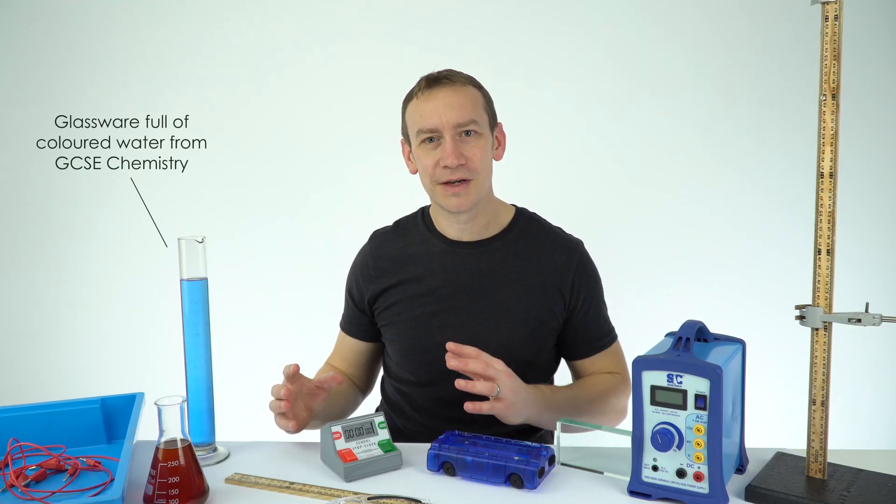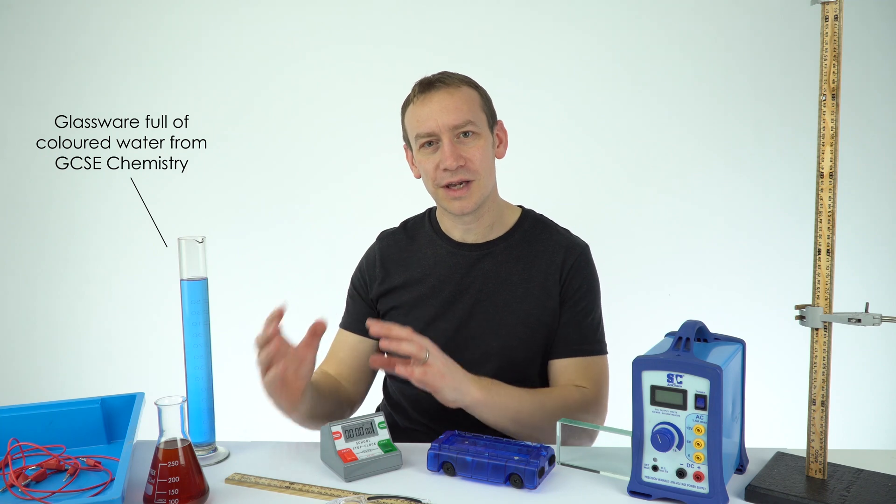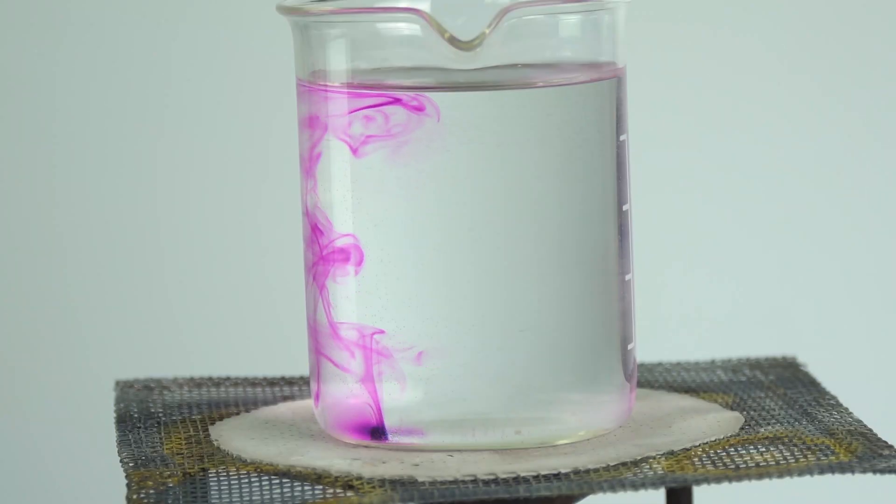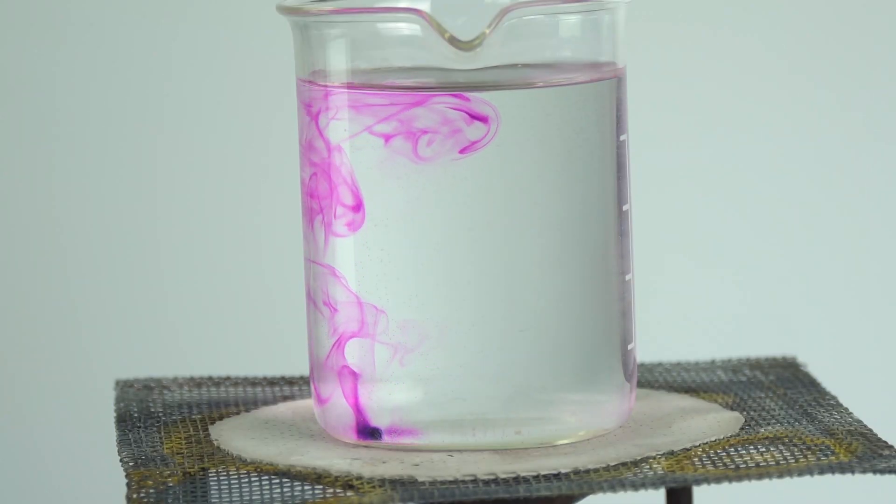Practical work is a big part of GCSE physics and there are three main categories. We might have a demonstration with a piece of apparatus that your teacher talks through, and this allows you to understand some of the underlying physics.